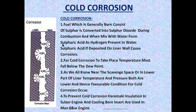Let's begin with corrosion wear, starting with cold corrosion. Cold corrosion occurs in the lower part of the liner due to the formation of sulfuric acid. The fuel contains sulfur, which is converted into sulfur dioxide during combustion. The water present in the air then mixes with the sulfur dioxide to form sulfuric acid, which tends to adhere on the liner surface and ring surface. Sulfuric acid is very corrosive in nature and causes corrosion.